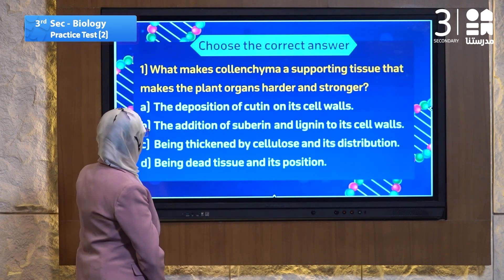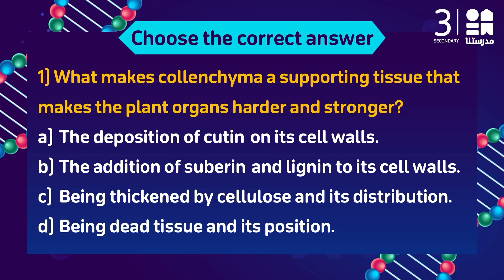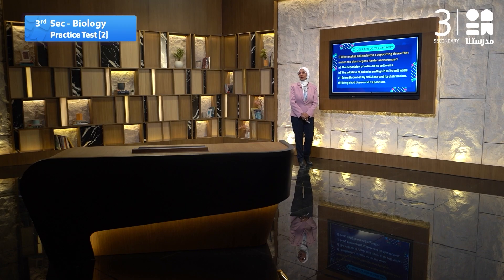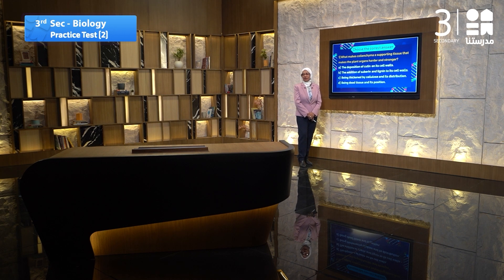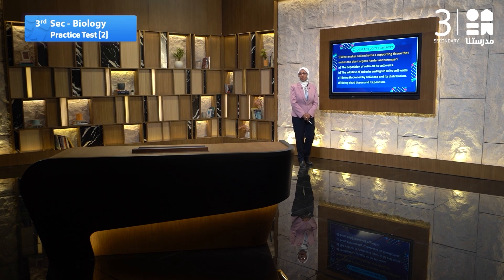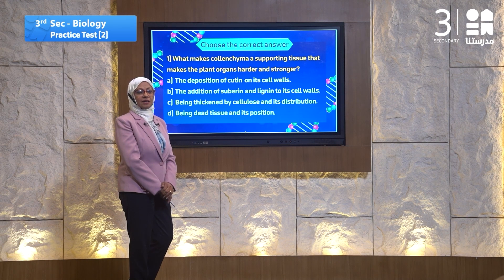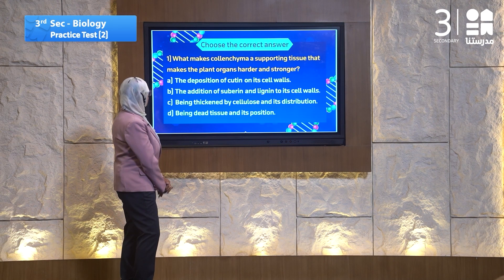The first question speaks about number one: What makes collenchyma a supporting tissue that makes the plant organs harder and stronger? There are many types of plant tissue. The first one is parenchyma, collenchyma, sclerenchyma, and others. The parenchyma tissue becomes collenchyma by strengthening the corners of the cell by a specific structure.